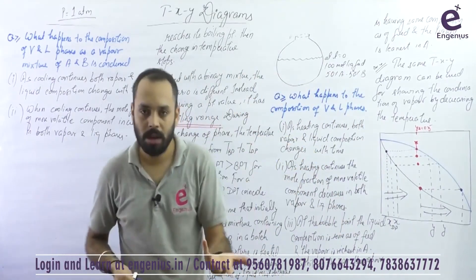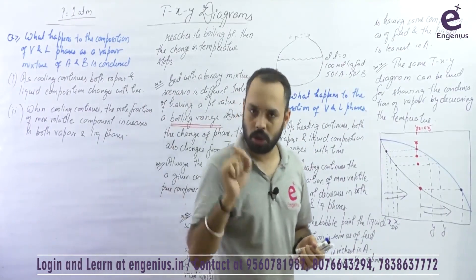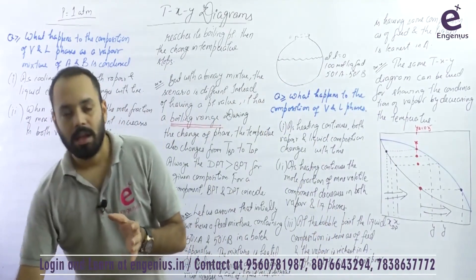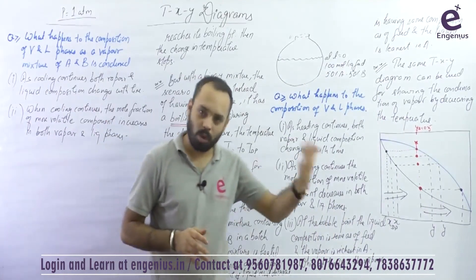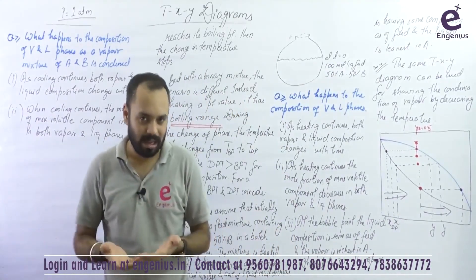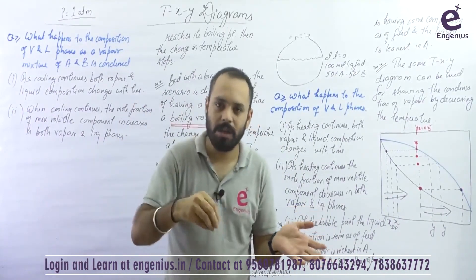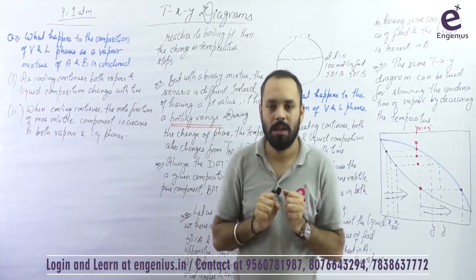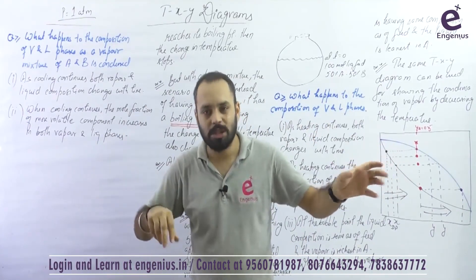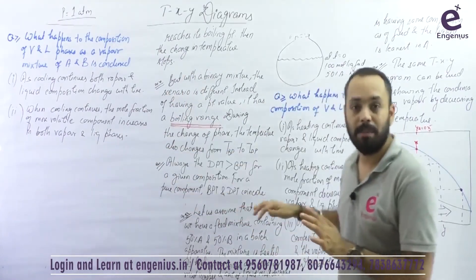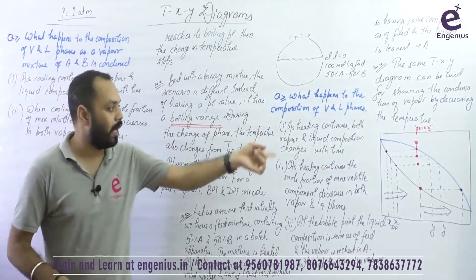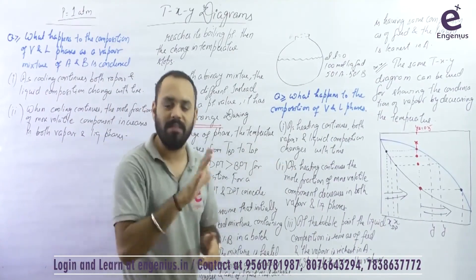When you are heating the liquid, A has more tendency to vaporize. But when you are cooling the vapor, B has more tendency to condense, because B is less volatile. More volatile means happy in vapor phase; less volatile means happy in liquid phase. So boiling is governed by the more volatile component, and condensation is governed by the less volatile component. While boiling, A is the leader; while condensation, B is the leader.